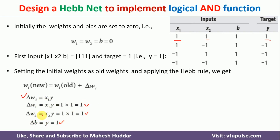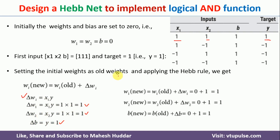Now, knowing the change of weights, we calculate the new weights. W1(new) = W1(old) + ΔW1 = 0 + 1 = 1. Similarly, W2(new) = W2(old) + ΔW2 = 0 + 1 = 1. B(new) = B(old) + ΔB = 0 + 1 = 1. So the modified weights are all 1 after the first example.